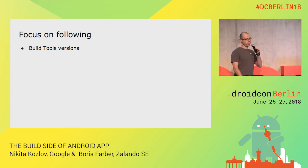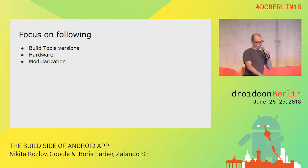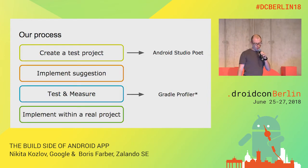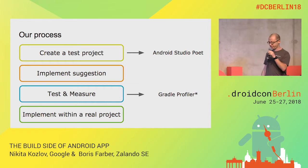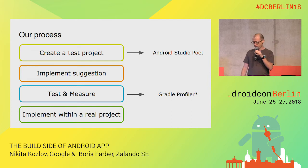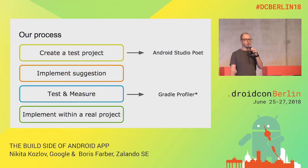In this talk, we are going to share with you the patterns on how to improve your build, from the easy to interesting: from build tool versions, hardware, and modularization. The approach that worked for us is creating a large test project with Android Studio Poet, implementing a suggestion, testing and measuring using Gradle Profiler, and once we are happy with the improvement, implementing it within a real project.